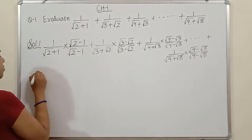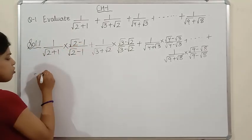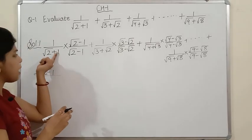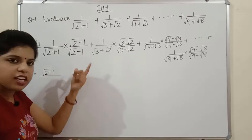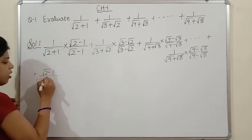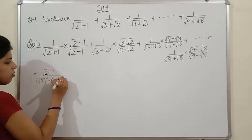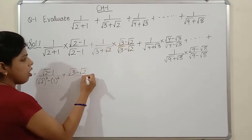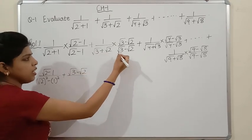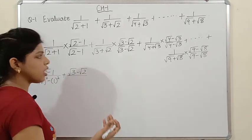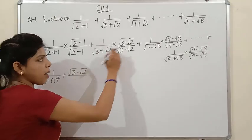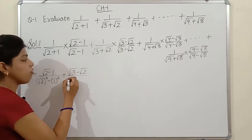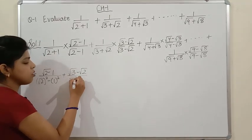So after rationalizing: the first term becomes (√2-1)/((√2)²-1²), which equals (√2-1)/(2-1). The second term becomes (√3-√2)/((√3)²-(√2)²) = (√3-√2)/(3-2). You can now understand why we rationalize — if there is a minus sign we multiply by the plus version, and vice versa. This always gives us the a²-b² formula in the denominator.